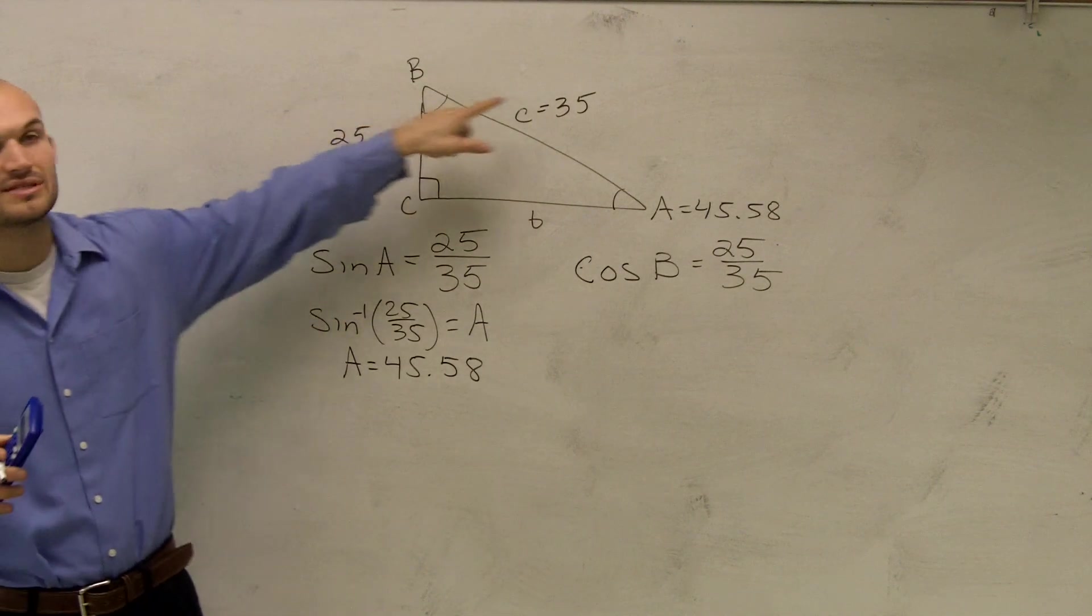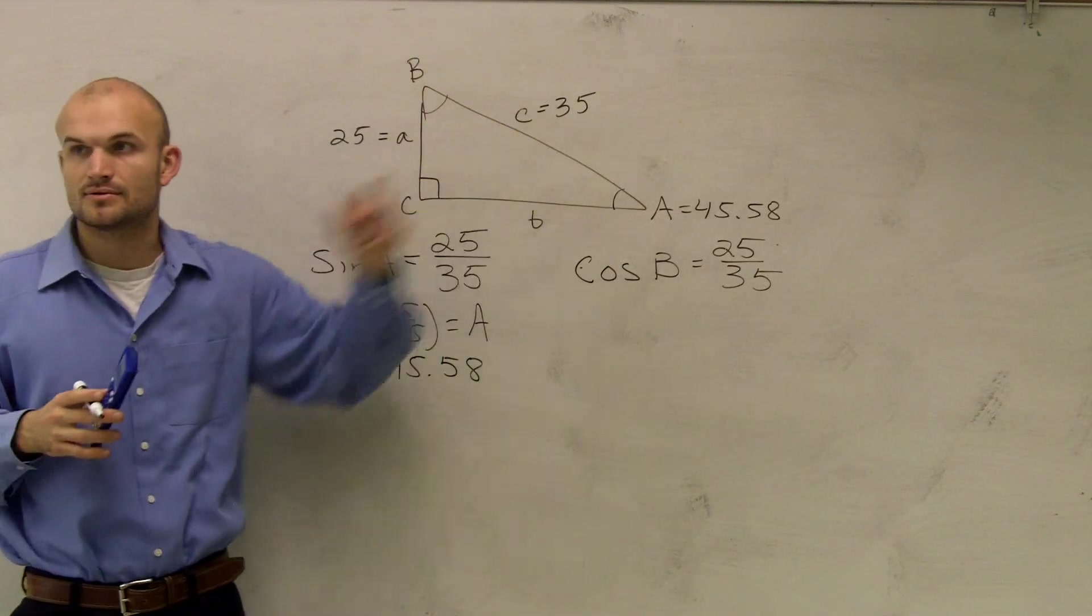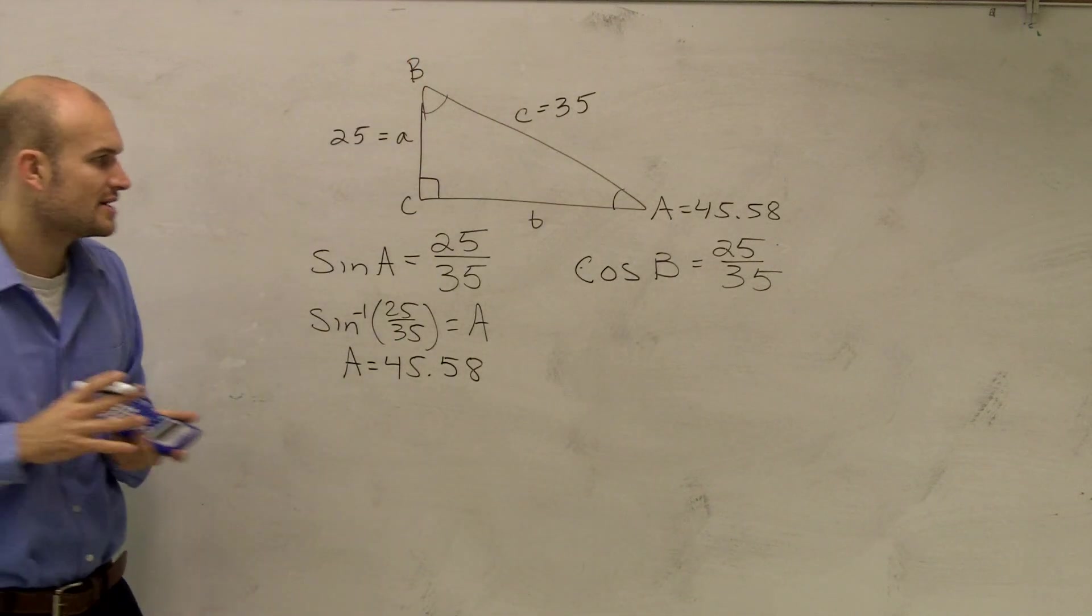So you guys see how you have to use sine for A and cosine for B? Because this angle, these two side lengths, or this side length, means different things to the different angles. Does that make sense? That was kind of like that question you guys asked before.